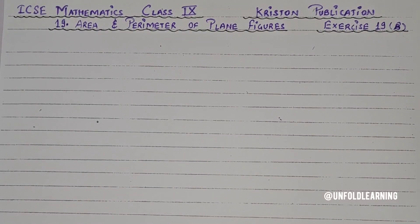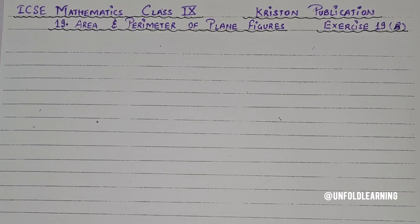Hello everyone, welcome back to my YouTube channel Unfold Learning. Today I am going to give you a core solution video from ICSC Mathematics Class 9, Kristen Publication, Chapter 19: Area and Perimeter of Plane Figures, Exercise 19B. If you haven't subscribed to my channel, please do subscribe. If you missed previous videos, please look in the description box where the rest of the solutions are provided as a playlist.